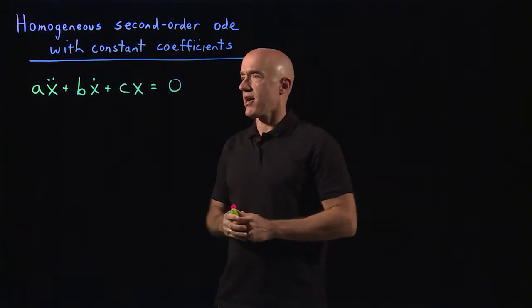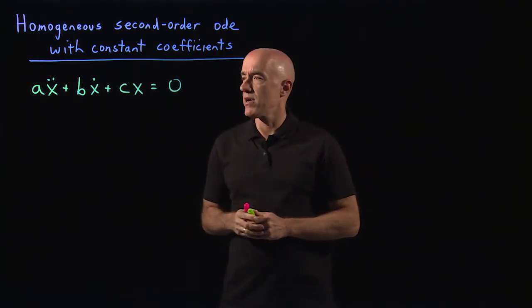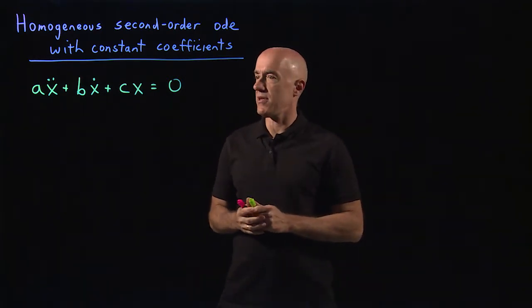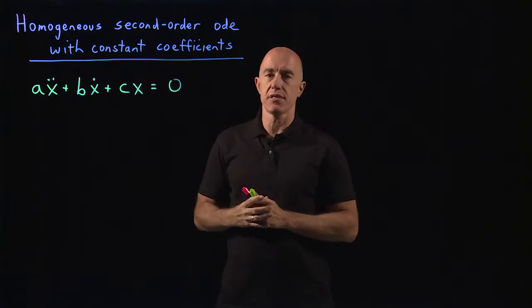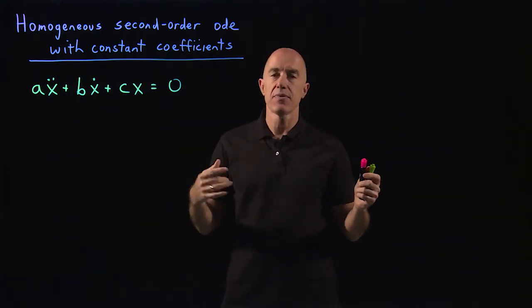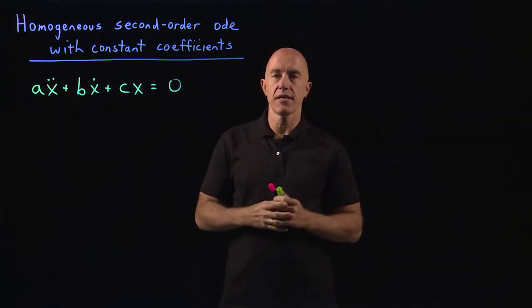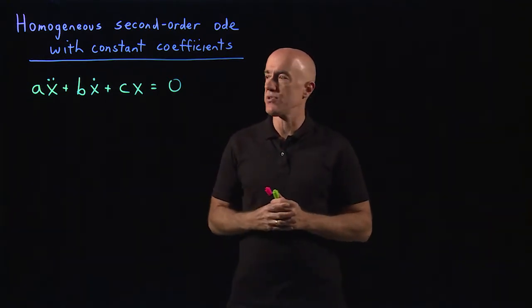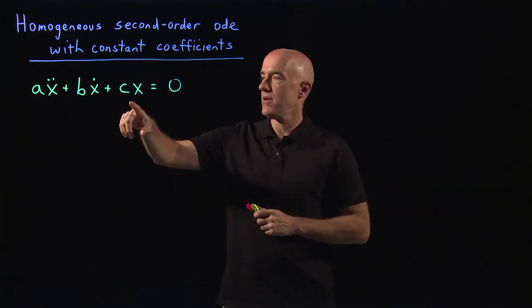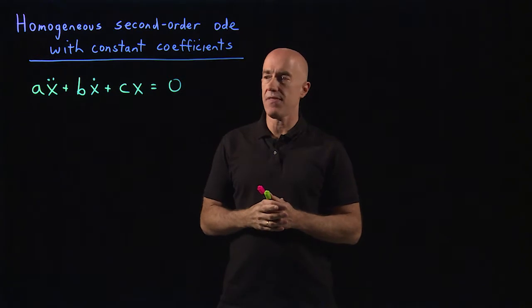So how are we going to solve this equation? We're going to make use of the principle of superposition. We're going to look for two solutions of this equation. Two solutions that have a non-zero Wronskian so we can satisfy two initial conditions. We're going to search for two solutions using what I call the Ansatz method.